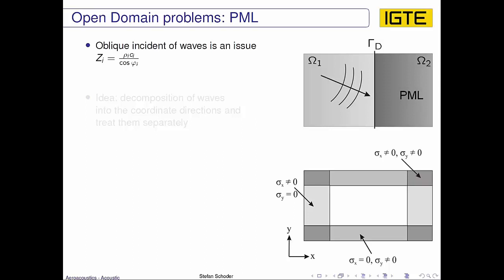The original idea was that we would like to tackle oblique incident of waves to the interface Γd. There the impedance is compensated by the cosine of the incident angle. And the idea now is that we can more or less decompose the waves into the coordinate directions. That if a wave has an oblique incident, then we decompose it into two waves. One has a normal incident and the other one is not—it's just traveling in another coordinate direction. And this separate treatment now ensures that we can also damp waves that are oblique incident there.